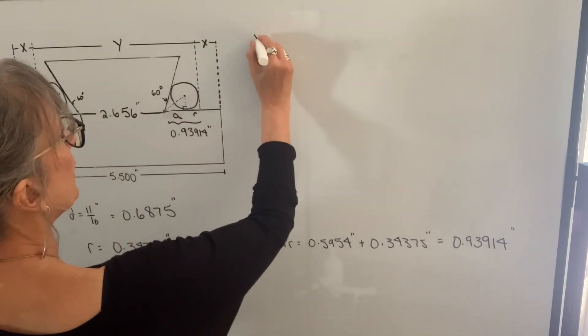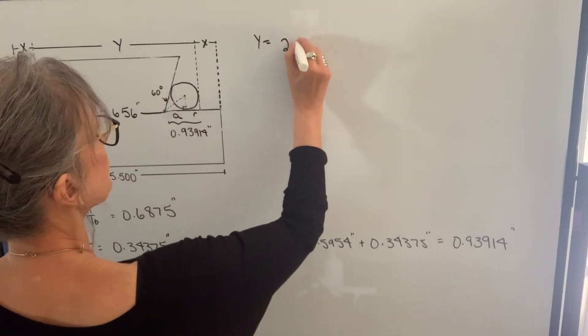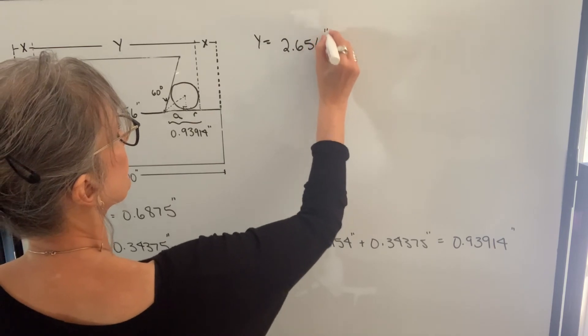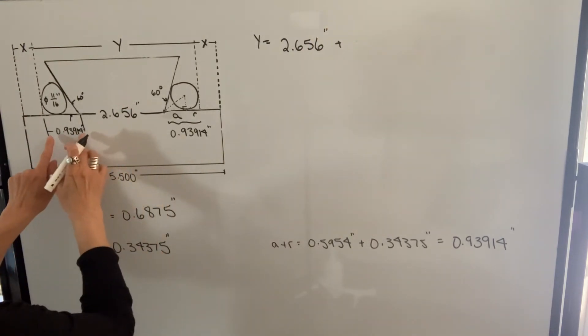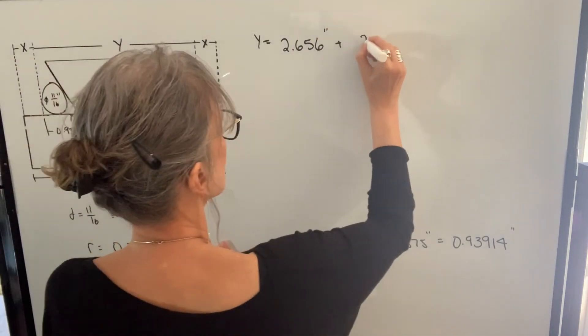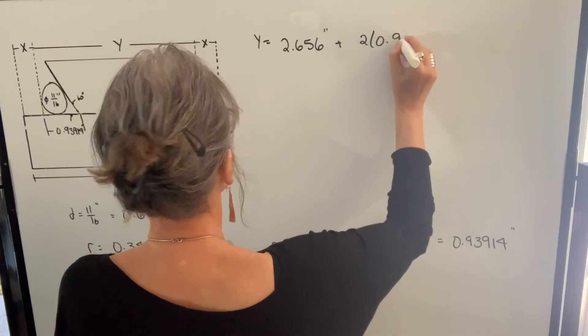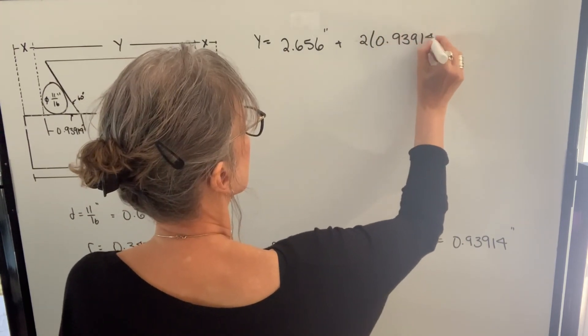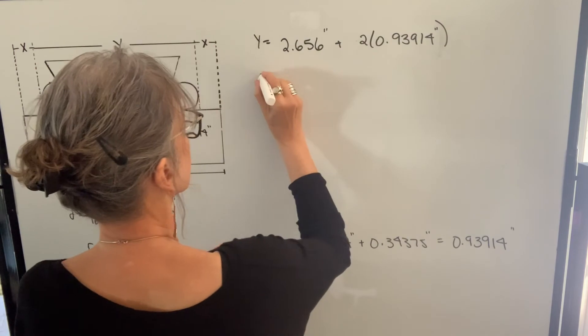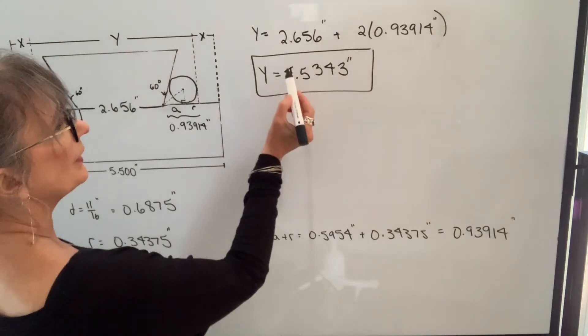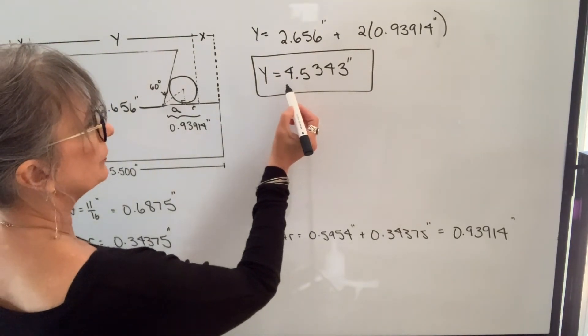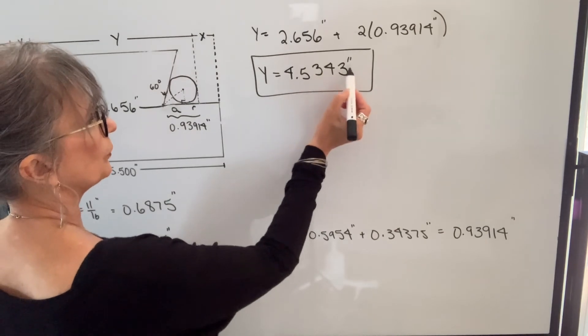Let's find Y. Y will equal 2.656 inches plus this length plus this length. So two of those lengths. We get a Y value of 4.5343 inches.